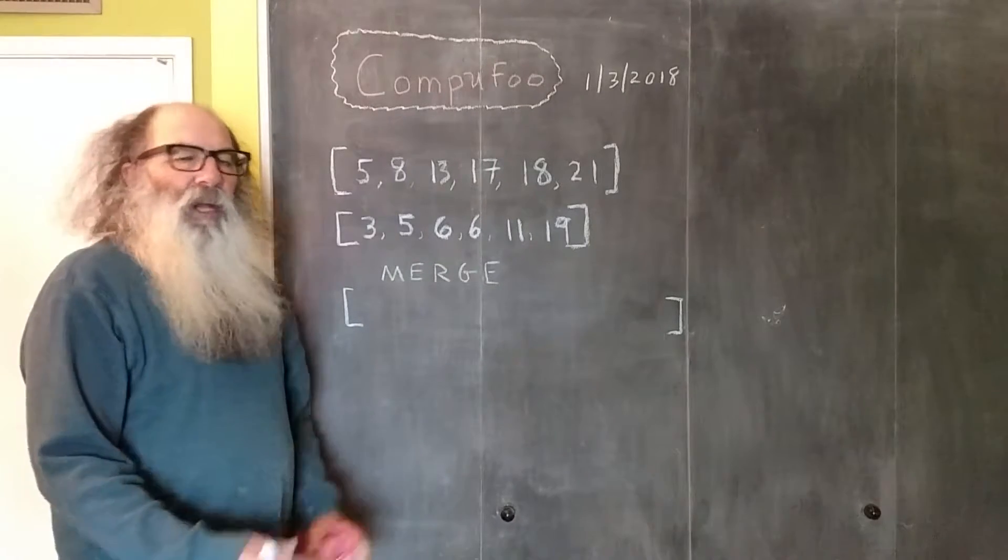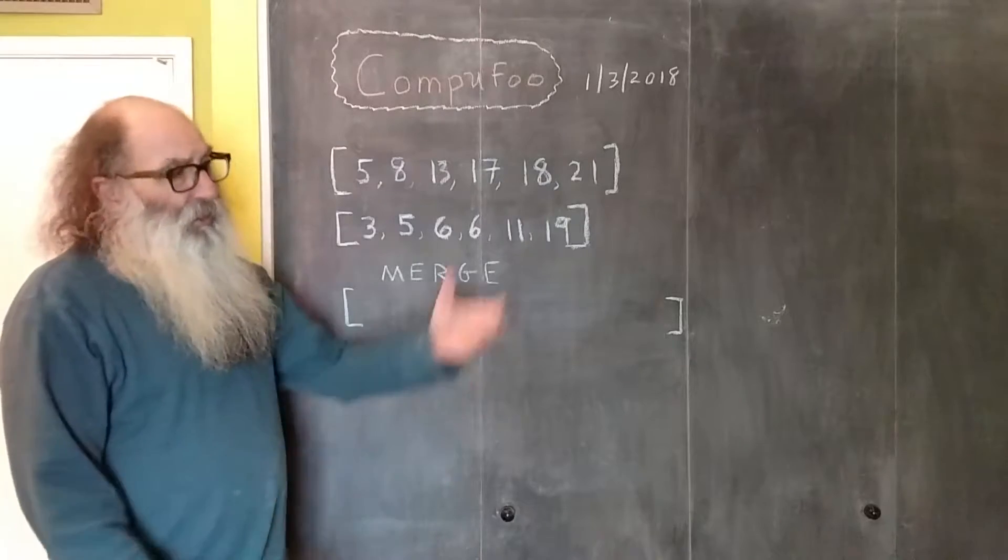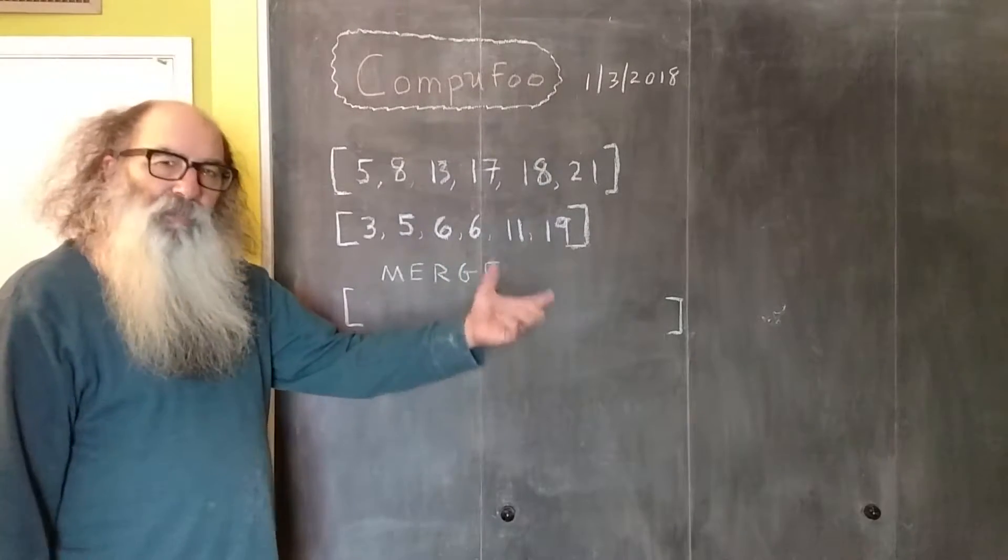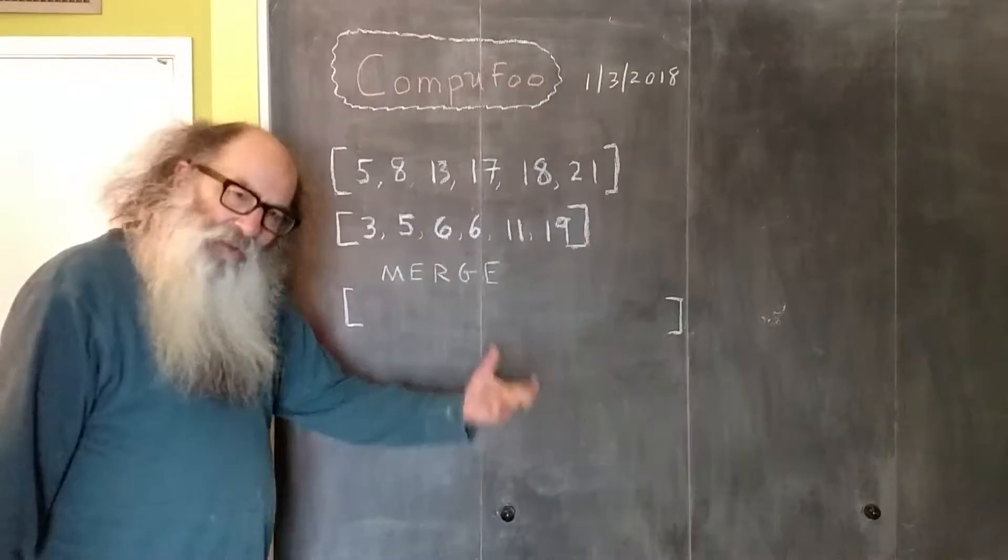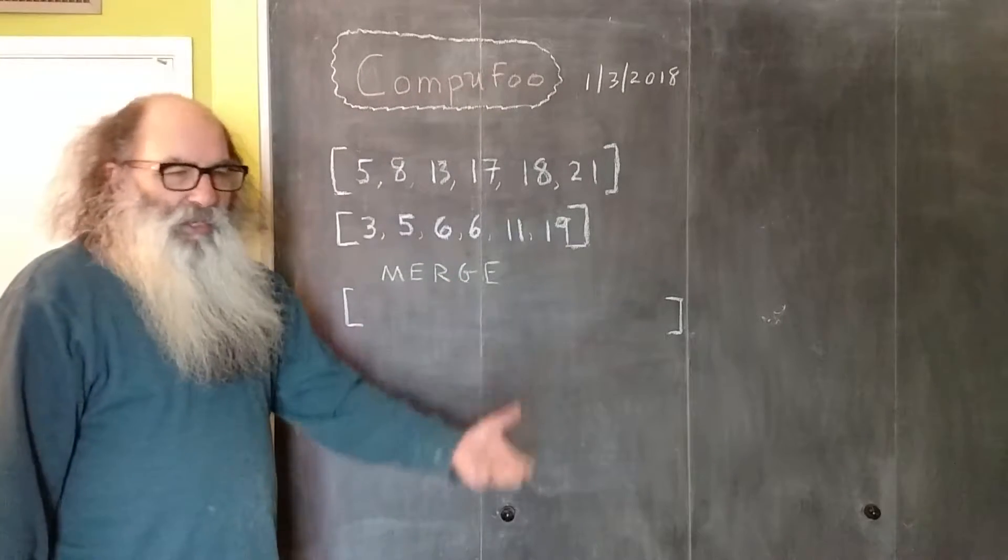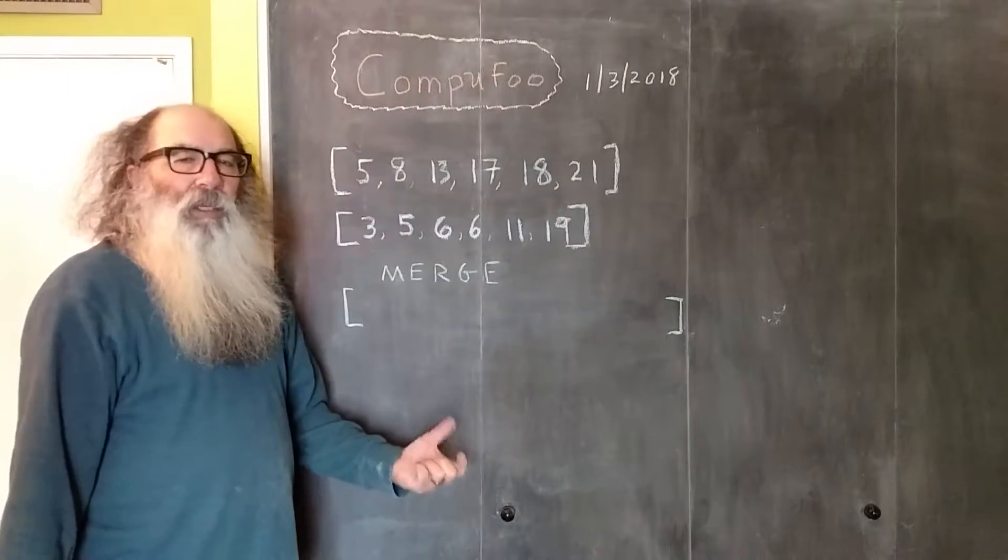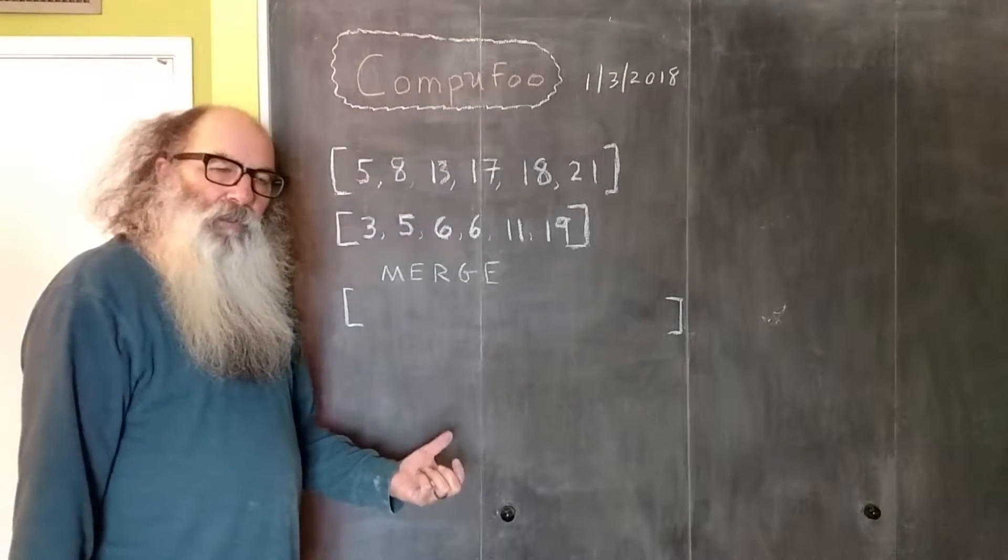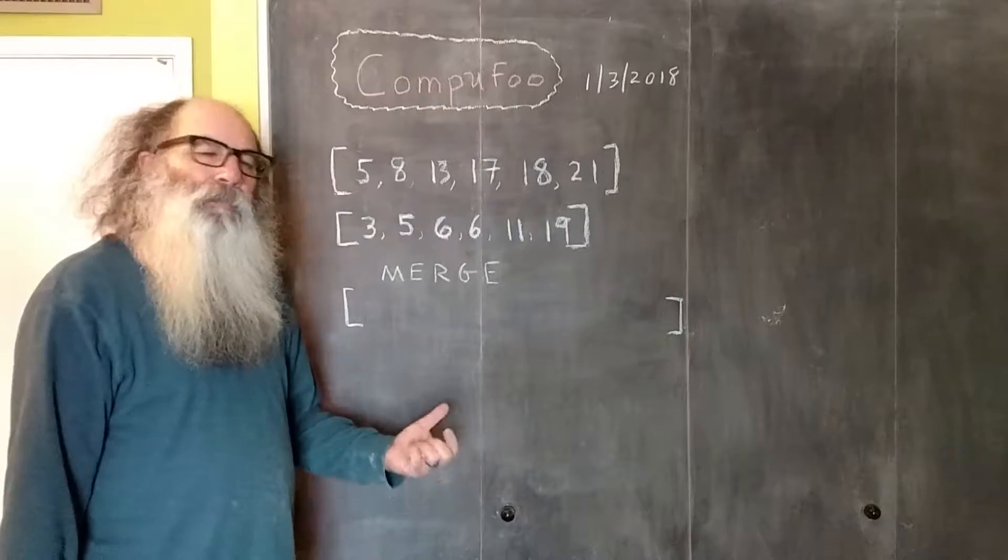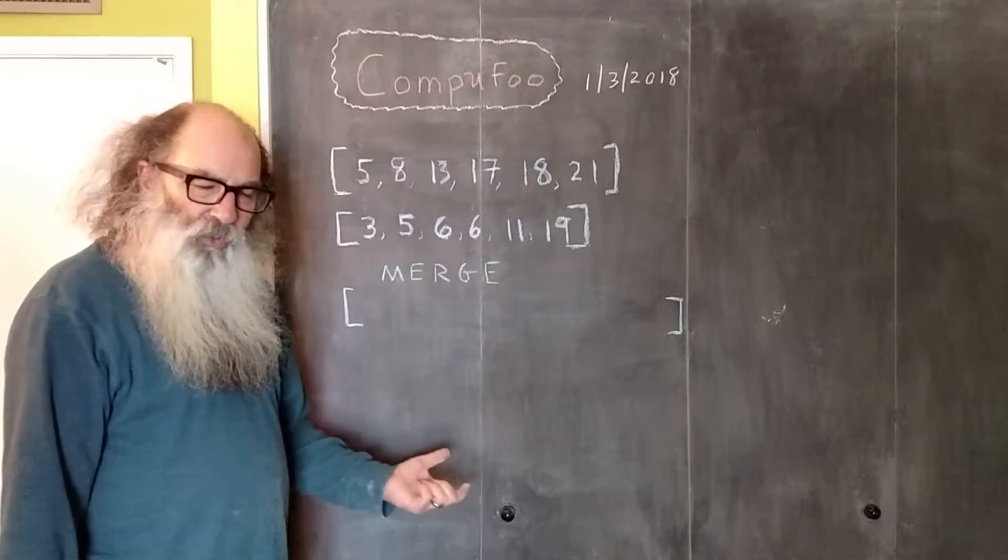The idea behind this divide-and-conquer algorithm is you start with the initial array that's not sorted, and you keep dividing it in half, and you keep dividing it in half until eventually you end up with a bunch of arrays that are single elements. An array with only one element is sorted.